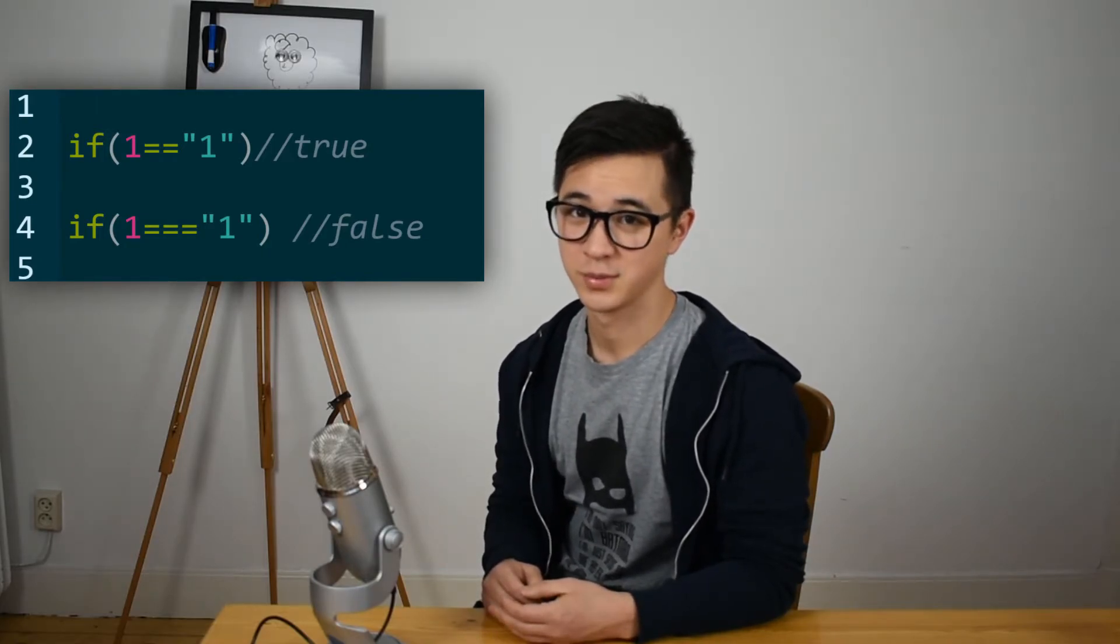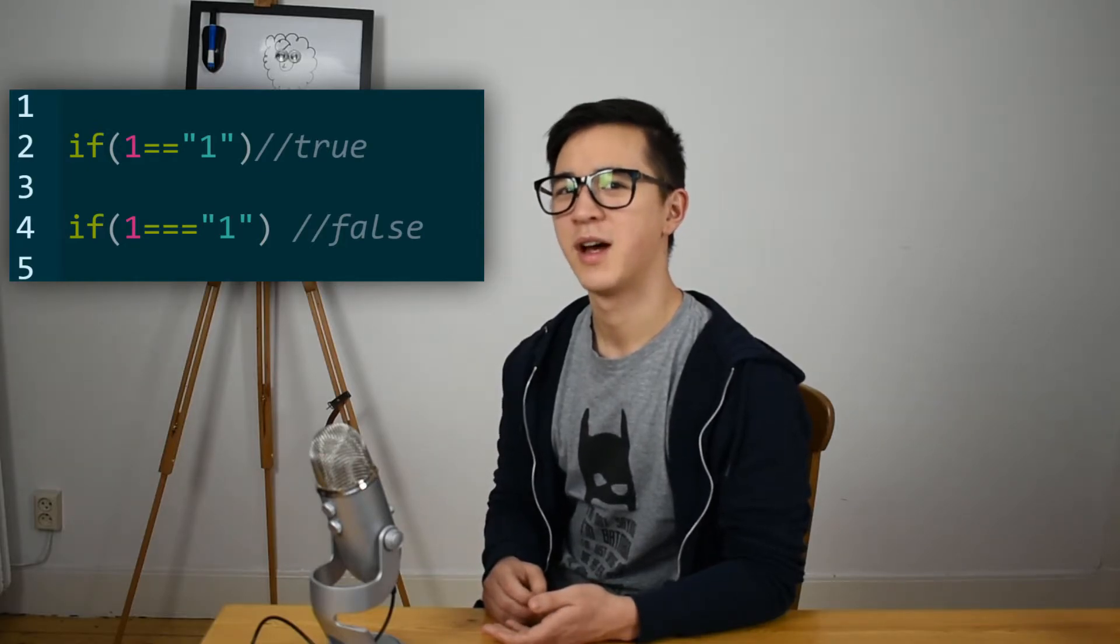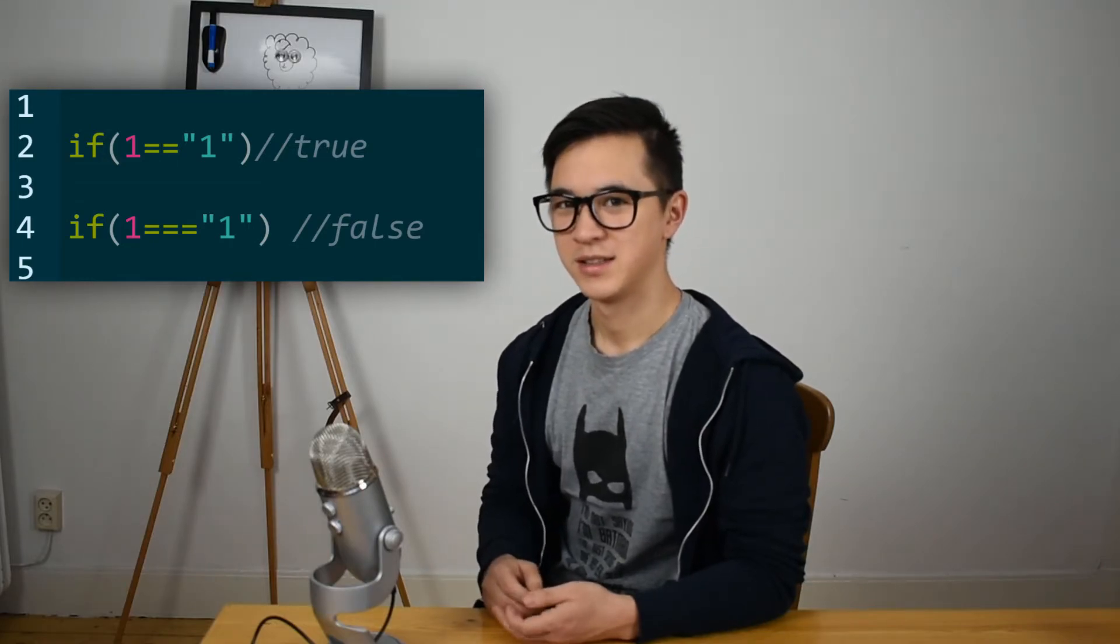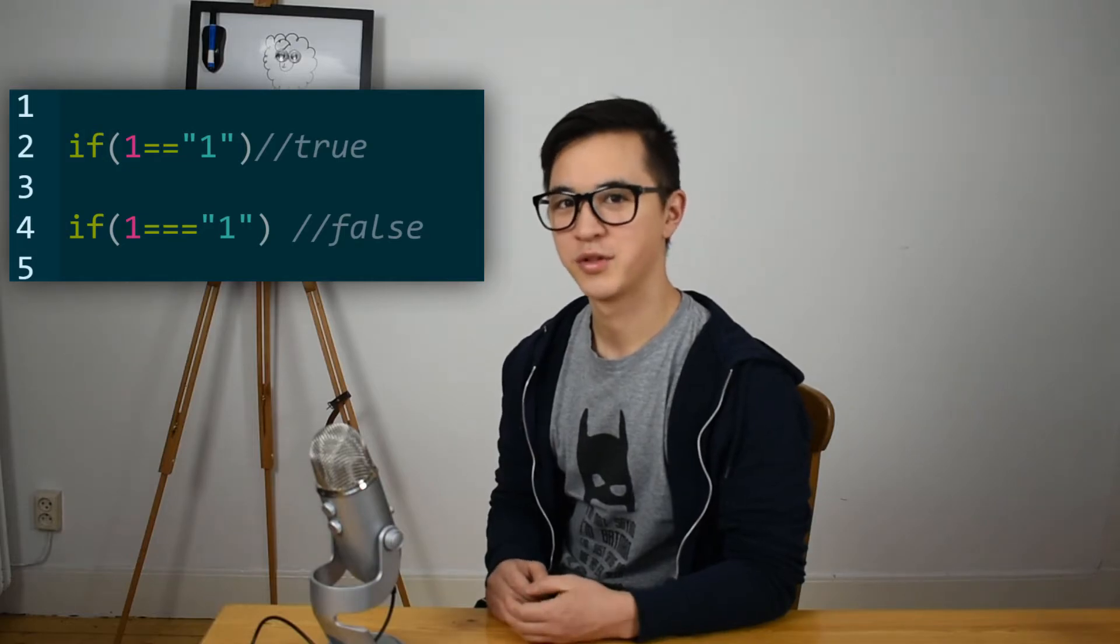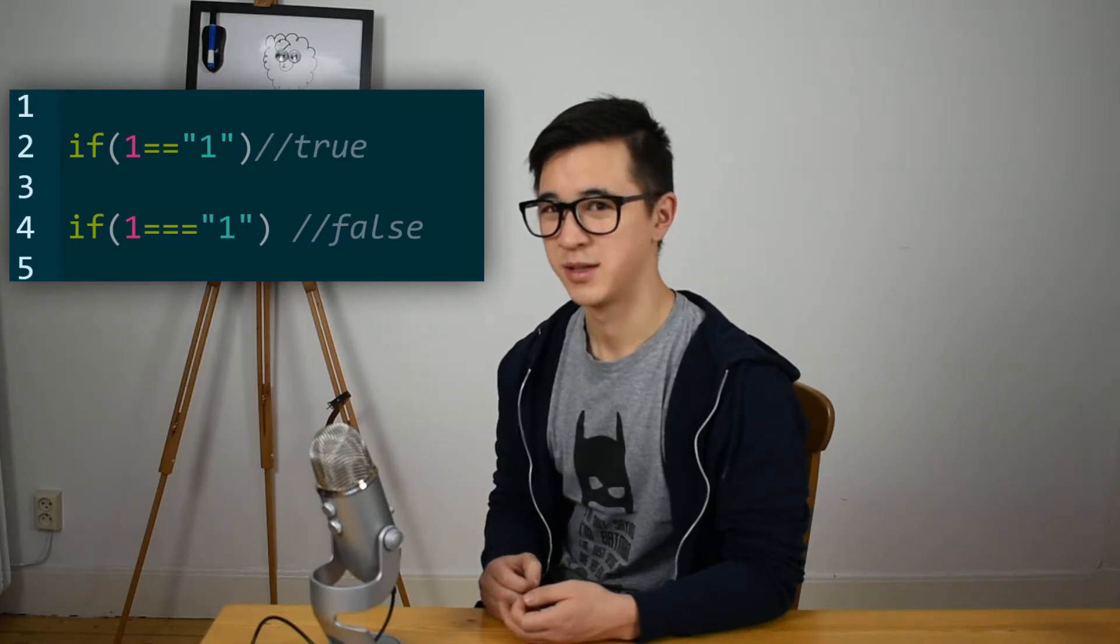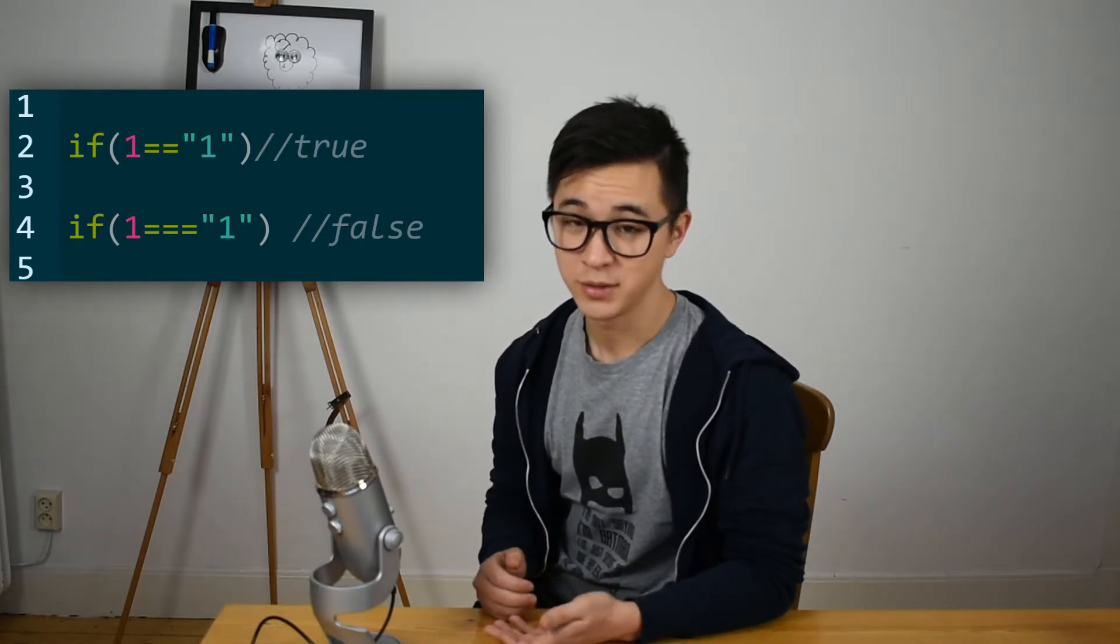But then I read an article explaining that even though you know the difference between two and three equal operators, it doesn't mean the person after you will know. If you work in a team or project, it's quite common that someone else will read your code, change your code, or take over the project after you. By using two equal operators, you're making the code less readable. Good code is code that anyone can read.